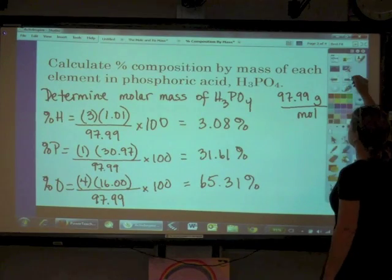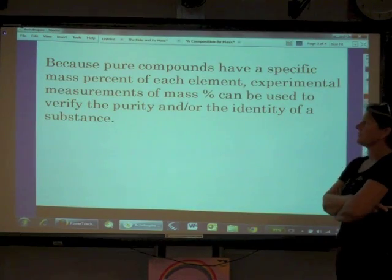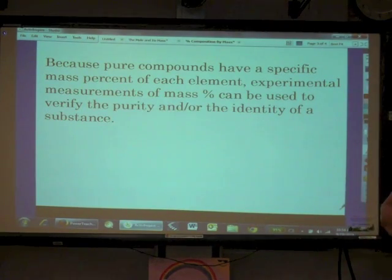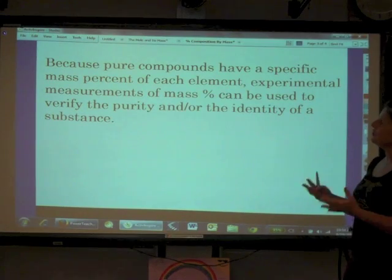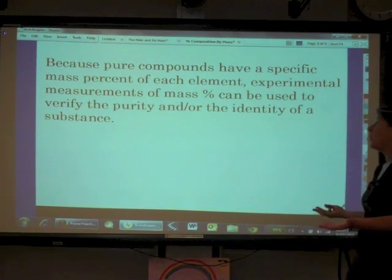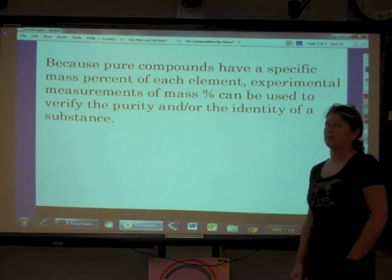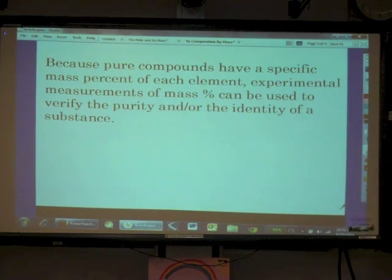Based on mass data, because pure compounds have a specific mass percent of each element it doesn't change because the identity of the elements aren't going to change and their mass isn't going to change. By getting experimental measurements of mass percent, we can use those to verify the purity of a substance. We can also use that data to identify what an unknown substance is. We have machines that can actually measure the mass percent of each element in a substance.